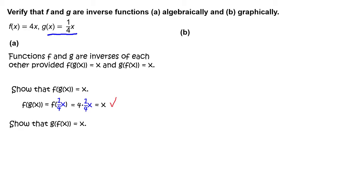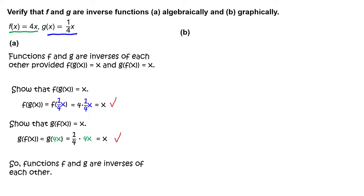Next, show that g of f of x equals x. Write g of f of x, which equals g of 4x, which equals 1 fourth times 4x, which in fact equals x. So, functions f and g are inverses of each other.